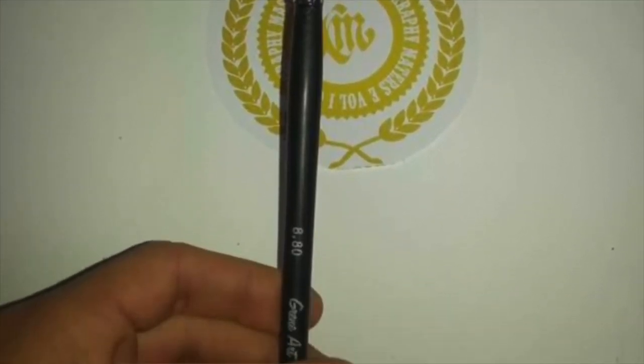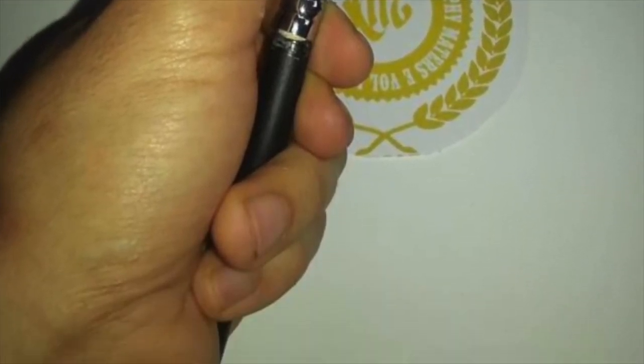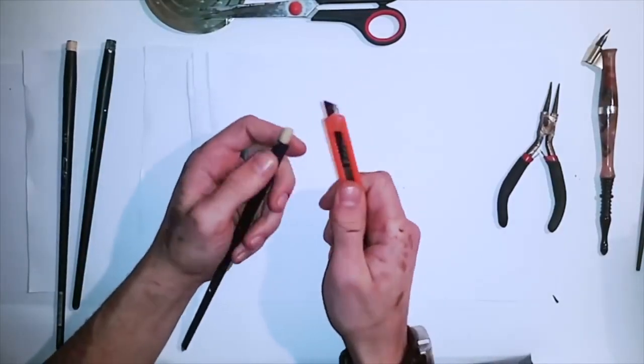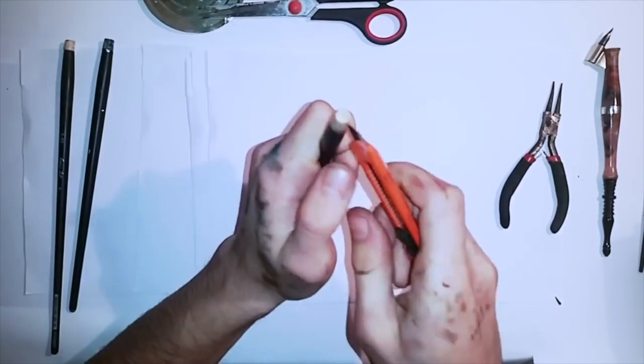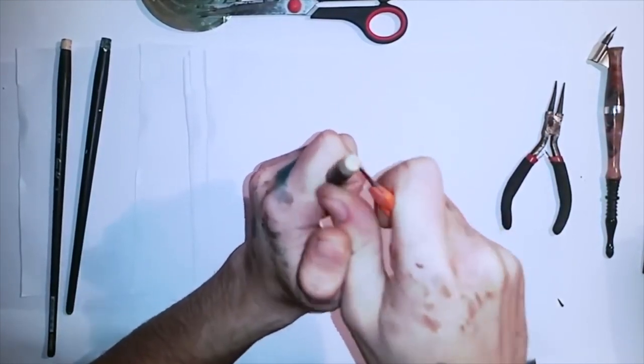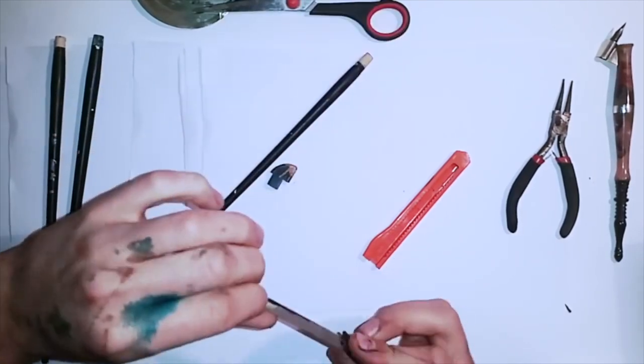So let's get started. First step, you take the brush, you have to break the top part of it. You start cutting with the box cutter or a scalpel if you have. You simply start cutting an incision in the wood like shown in the video.